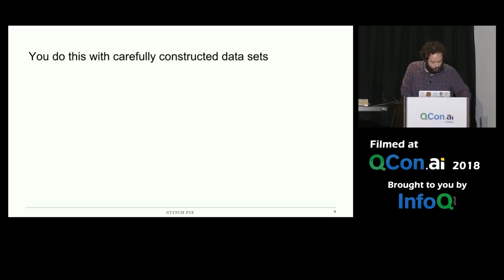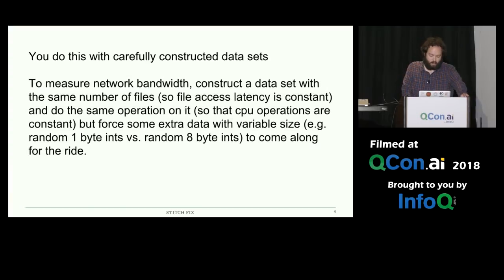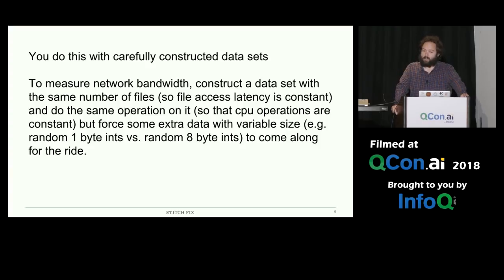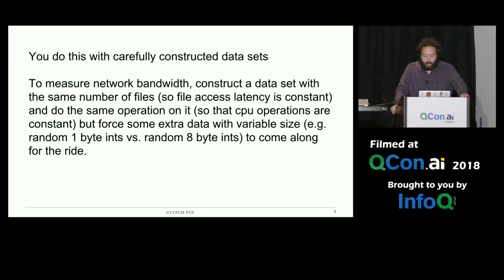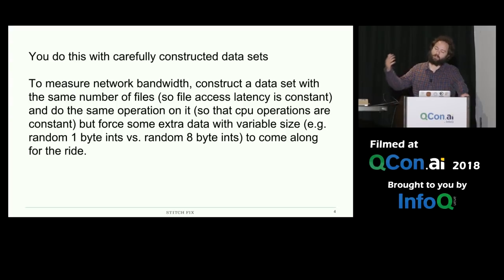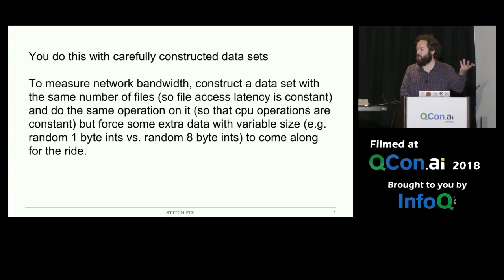So how do you actually do this? You do this with carefully constructed data sets. To measure network bandwidth, you want to construct a data set where the one and only one thing that changes is the network bandwidth requirements. You'd construct a data set with the exact same number of files so that the latency cost is the same, and do exactly the same operations so that CPU performance also remains the same. Then you construct the job so that some extra data of variable size has to come along for the ride — for instance, a random one-byte integer versus a random eight-byte integer. That changes your bandwidth requirements and only that. Then you take differences in run time and you've actually learned something about achieved performance.